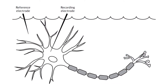The membrane potential is the difference in electrical charge between the inside and outside of the neuron. This is measured using two electrodes. A reference electrode is placed in the extracellular solution, and the recording electrode is inserted into the cell body of the neuron.